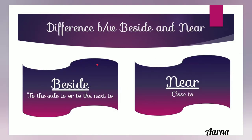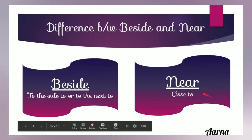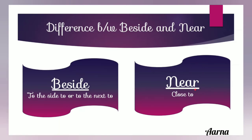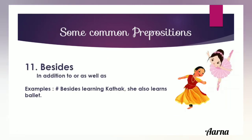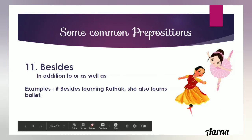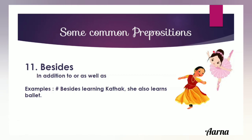The difference between 'beside' and 'near': 'beside' means just to the side. The next preposition is 'besides', meaning in addition to or as well as — used when someone has or is doing something of a similar type but different. For example, the girl is learning Kathak and ballet — both are dance forms but different, so we say 'besides learning Kathak, she also learns ballet', meaning in addition to Kathak, she is also learning ballet.